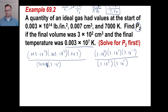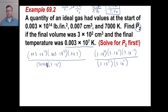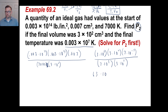So 3 times 3 times 7: that's 9 times 7, which is 63, times 10 to the 4 plus 11 is 15. 15 plus negative 3 is 12. We know this is 21 down here. 7 times 3 is 21. That's going to be 10 to the 5th power. 63 divided by 21 is 3. And then 10 to the 12th divided by 10 to the 5th is 10 to the 7th. And there we go.